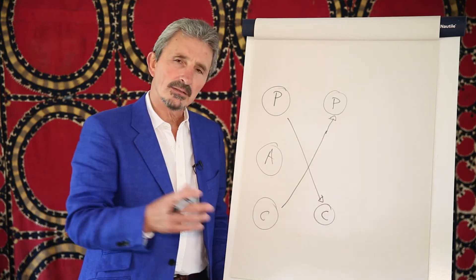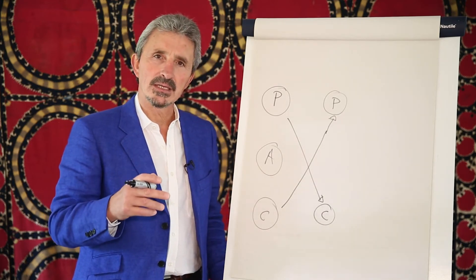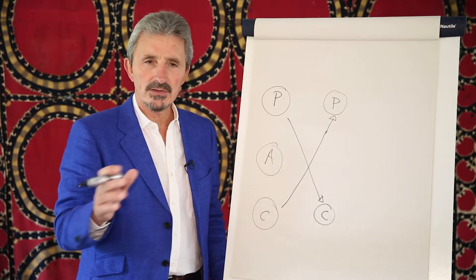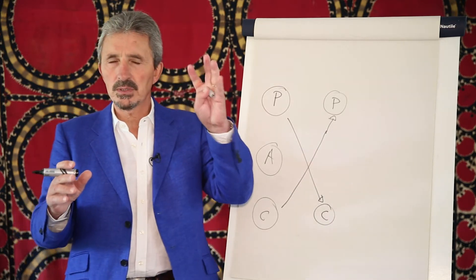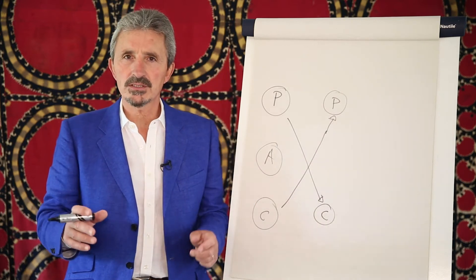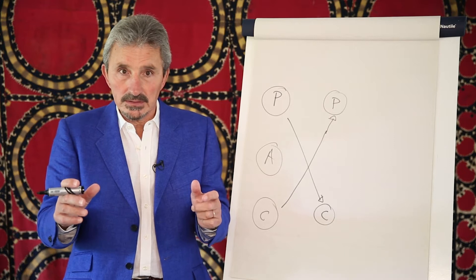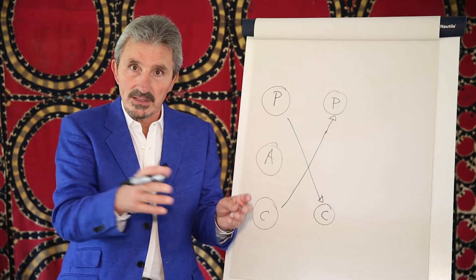The other bit of child goes back to that dependency, and we all know this. When we're driving along in the car and we see that little blue light in our window, what's our first reaction? That little 'Oh, have I done something wrong?' We look at the speed: 'Oh no, it's not me.'